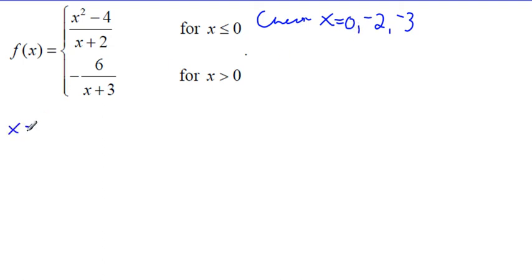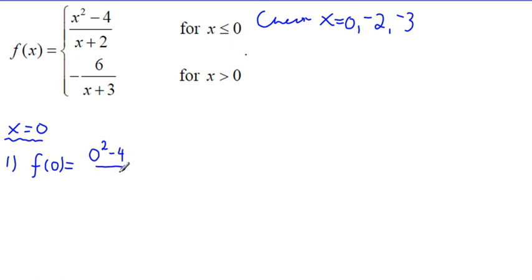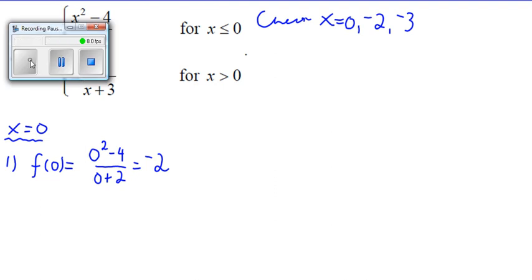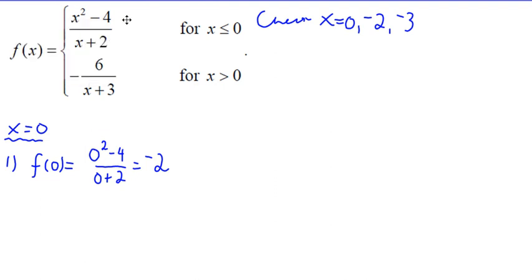Let's check x equals zero. I like to write the rule number out. So I check f of zero — rule one, is it defined? I have to figure out which interval it's in. This piece has the 'less than or equal to' part, so I use that. It's zero squared minus four divided by zero plus two, which gives negative four divided by two, so f of zero equals negative two. Rule one of the definition of continuity is satisfied — f of zero equals negative two, so it exists.